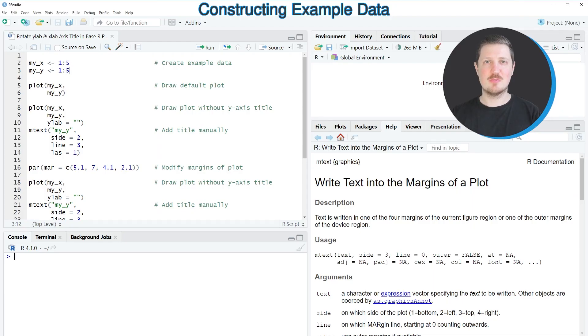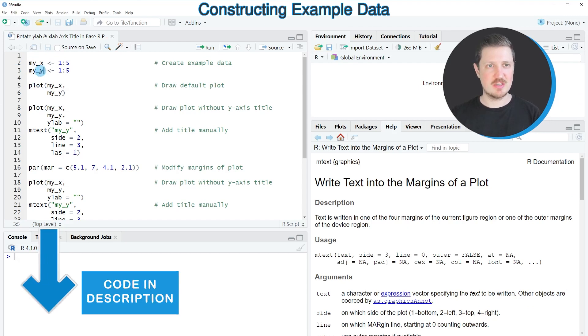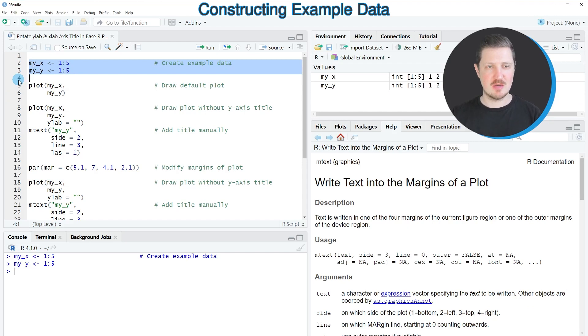In this video I will show you an example based on two vector objects that we can create with lines 2 and 3 of the code. After running these two lines, our new vector objects are appearing at the top right, called myx and myy. Both vectors contain a range of integers from 1 to 5.